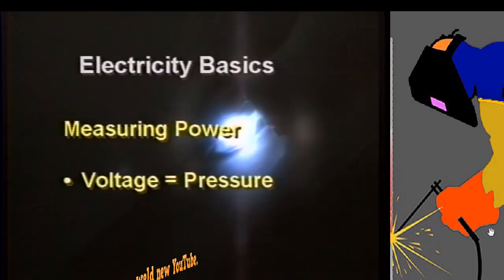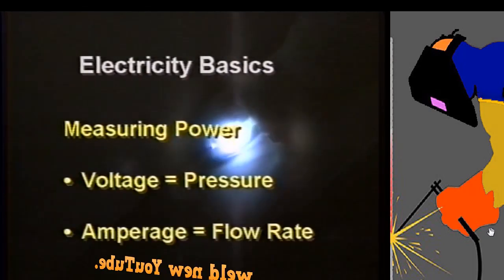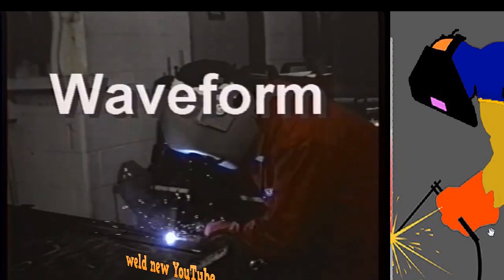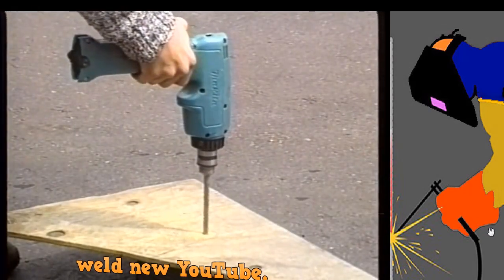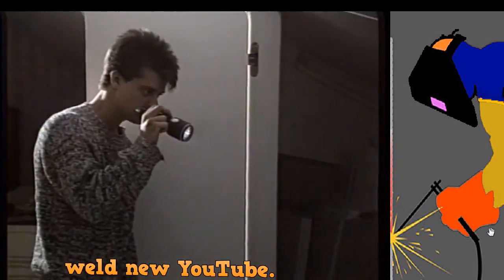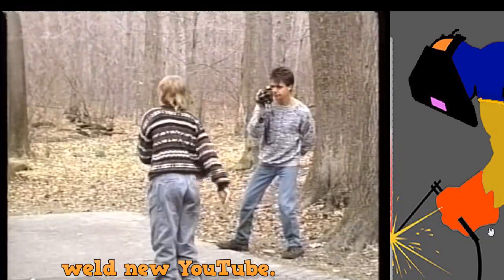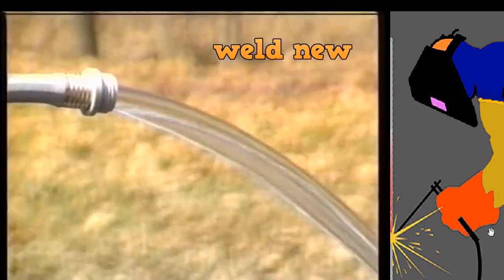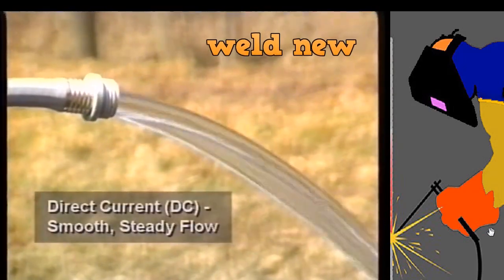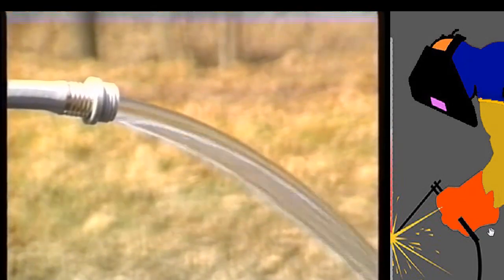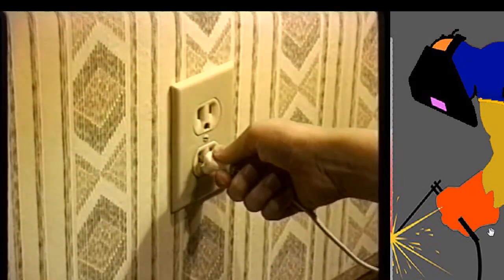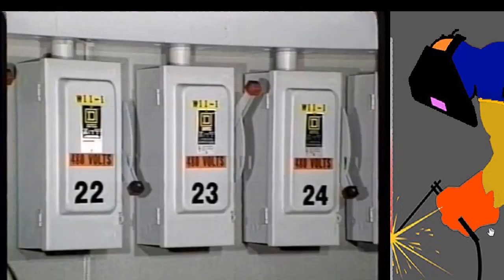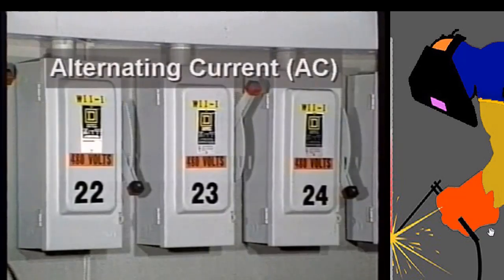We'll describe the importance of voltage — or pressure — and amperage flow rate to the arc welding process in just a moment. But we also need to look at a special property of certain types of electricity called waveform. We use electricity in two main forms to do work. The electricity supplied by batteries to operate everything from flashlights to camcorders is called direct current, or DC.